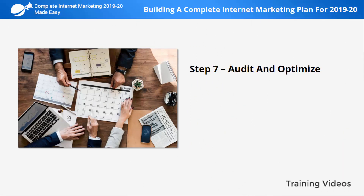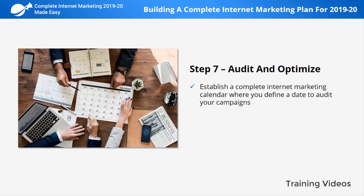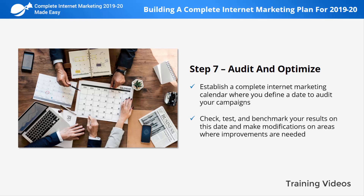Step number seven: audit and optimize. Establish a complete internet marketing calendar where you define a date to audit your campaigns, check, test, and benchmark your results, and make modifications in areas where improvements are needed. For example, if one of your articles is getting low bounce rates from social media traffic but a low number of visits from search, it might mean that you need to modify the article headline and metadata.